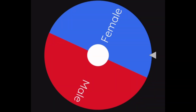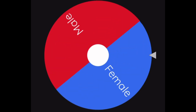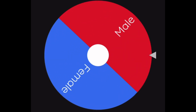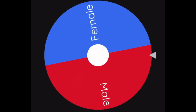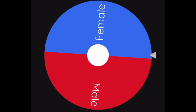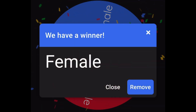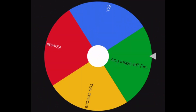So, the first wheel we're going to spin is going to choose the gender-based clothing that we're going to do. 50-50 chance here. Okay, we got female clothing, so we're going to go ahead and do female.